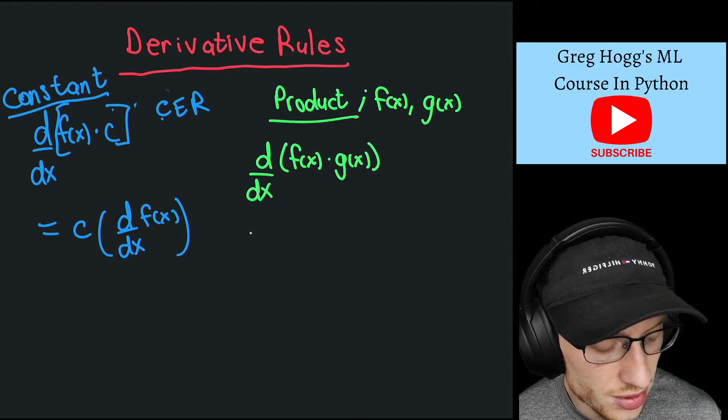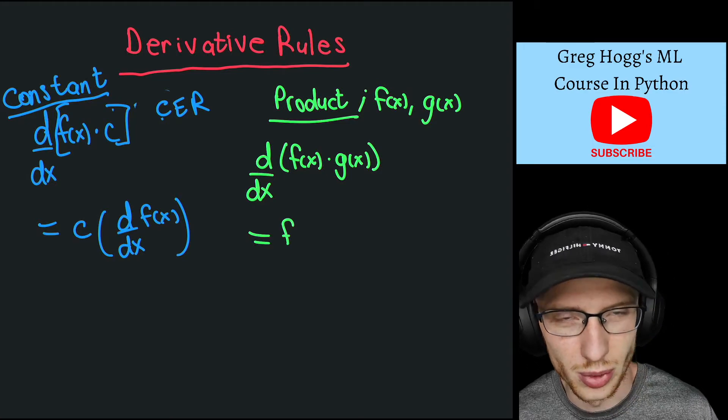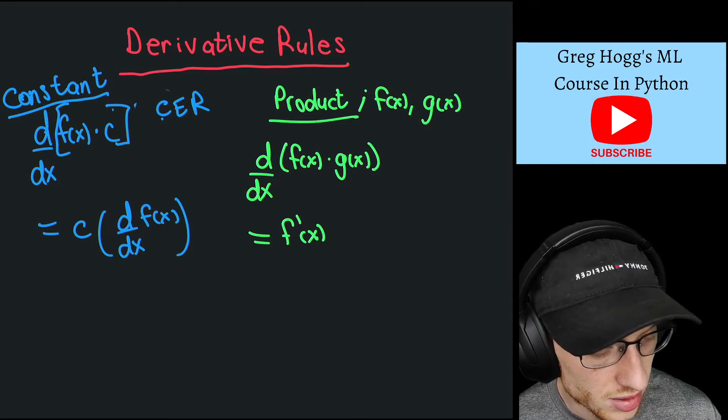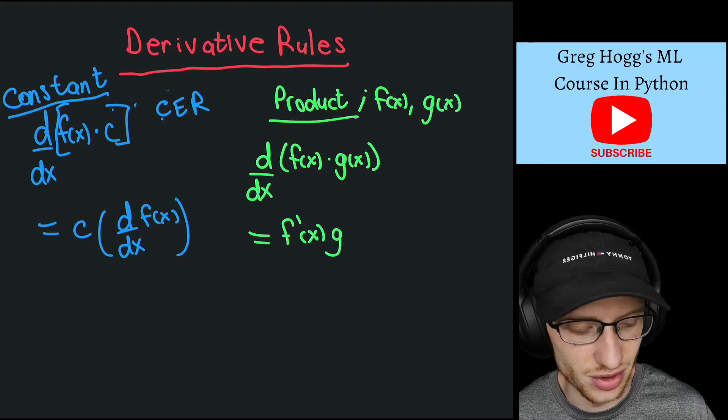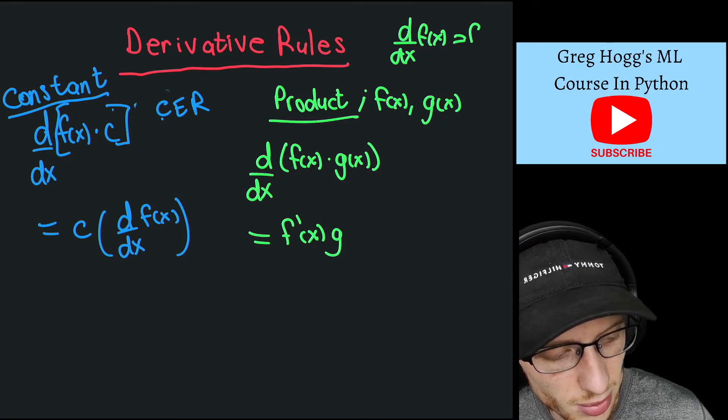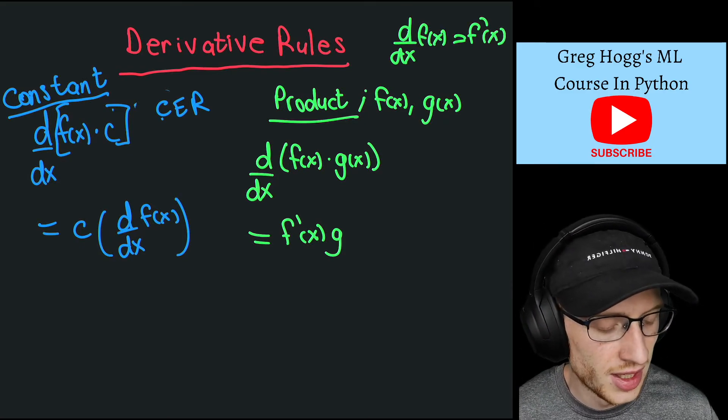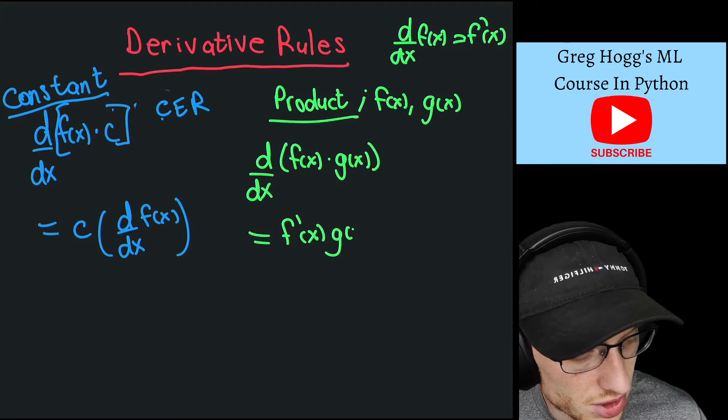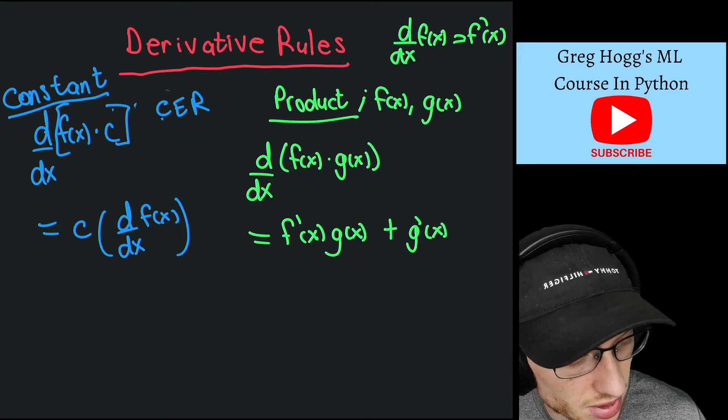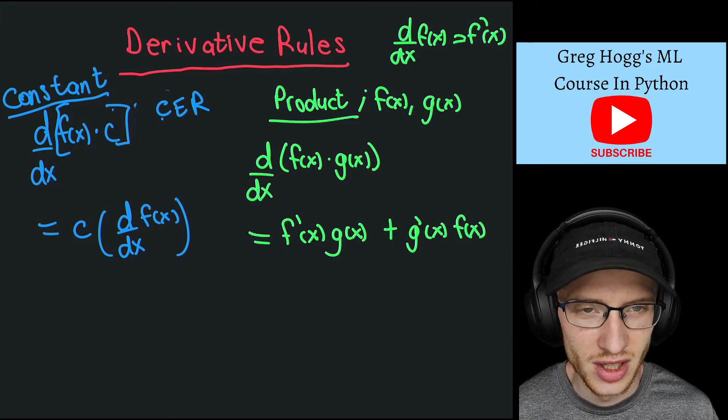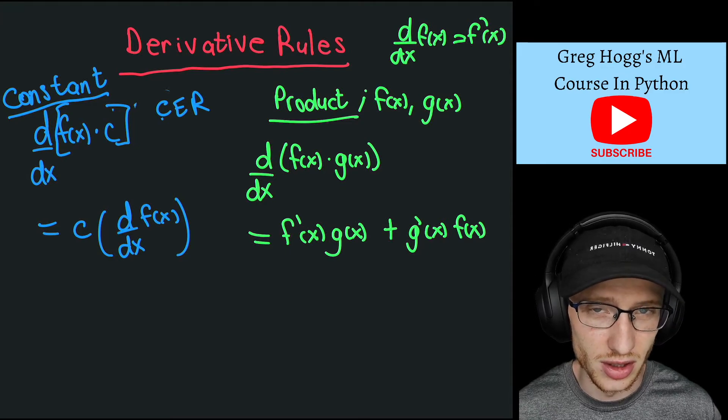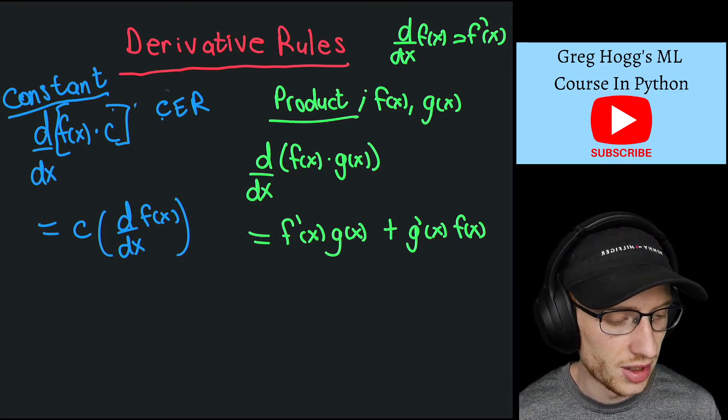It equals f'(x)·g(x) + g'(x)·f(x). By the way, f' is just another notation for the derivative - f'(x) means d/dx of f(x). So it's the derivative of one times the original of the other, plus the other way around. That's the product rule.